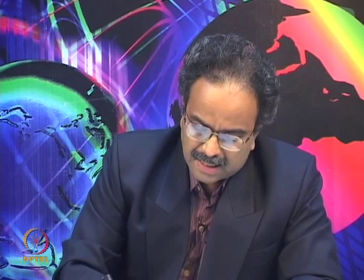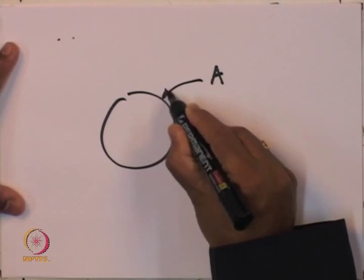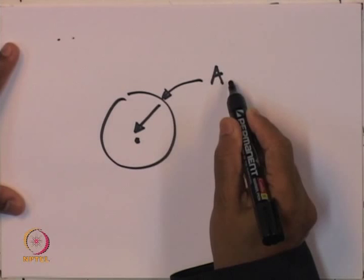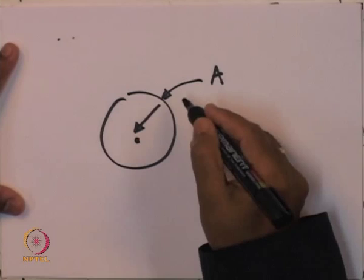On a catalyst particle, a reactant first goes to the external surface, then diffuses inside, reaches a catalytic site where adsorption, reaction, and desorption occur, and then the product back-diffuses and undergoes external mass transfer to the bulk. We are now going to concentrate on this particular step — pore diffusion — for the next three to four lectures.